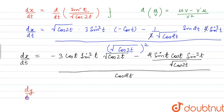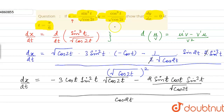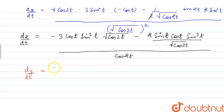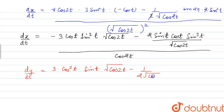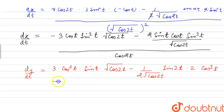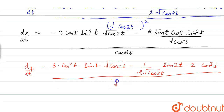Now we find dy/dt by differentiating the second equation using the same quotient rule formula. The differentiation of cos³t gives 3 cos²t, and differentiation of cos t is negative sin t, multiplied by √(cos 2t). Then we subtract: the derivative of 1 upon √(cos 2t) is 1 upon 2√(cos 2t), differentiation of cos 2t gives sin 2t, and differentiation of 2t gives 2, multiplied by cos³t. The whole expression is divided by √(cos 2t) squared.